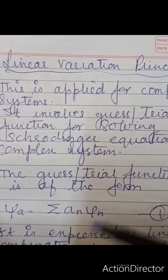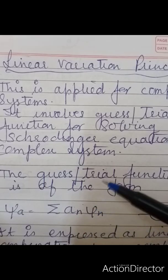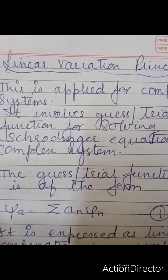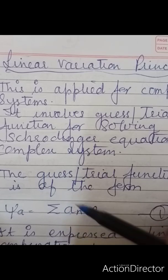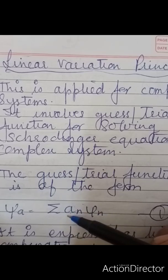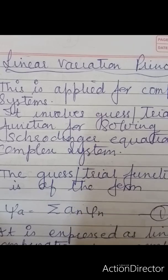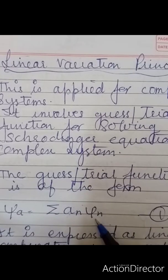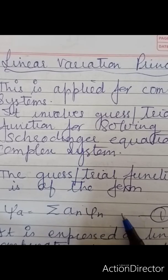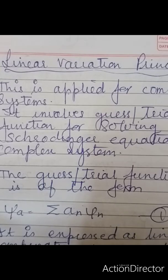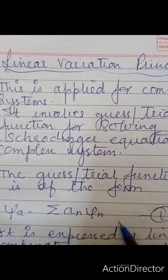Here psi_n is represented by psi_1, psi_2, psi_3, and so on. The coefficient a_n is an arbitrarily chosen parameter known as the variational parameter or coefficient. According to the linear variation principle, if the trial function has more parameters, its corresponding energy will be closer to the exact energy E0, the ground state energy.